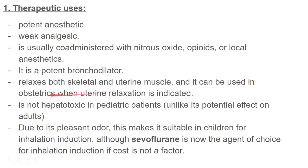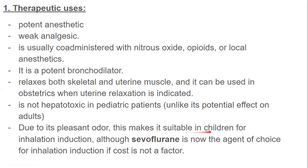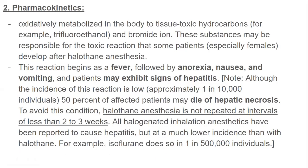Halothane is a potent bronchodilator, relaxes both skeletal and uterine muscles, and can be used in obstetrics when uterine relaxation is needed. It is not hepatotoxic in pediatric patients, unlike its potential effect on adults — liver toxicity was indicated in adults. Because of its pleasant odor it is suitable for administration to children. However, sevoflurane is now the agent of choice when cost is not a factor.